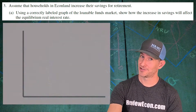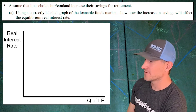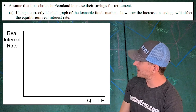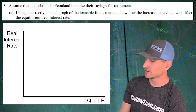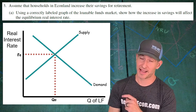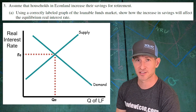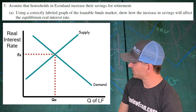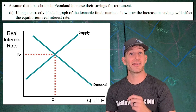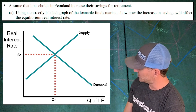Let's start off by drawing out our axes and then label the x-axis quantity of LF, or quantity of loanable funds, and our y-axis as the real interest rate. Just like most other supply and demand graphs, our demand curve is downward sloping and our supply curve is upward sloping. Make sure you label the equilibrium real interest rate — I have it RE there — and the equilibrium quantity of loanable funds as QE.